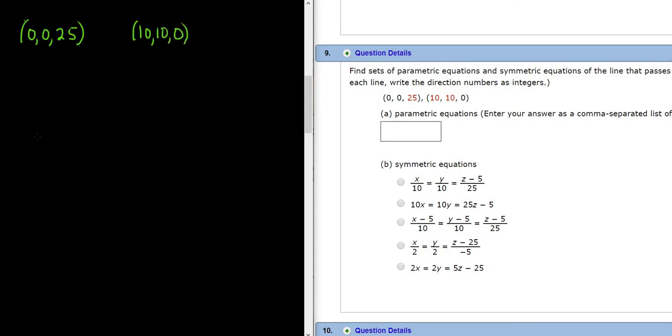So the formula for the parametric equations is x equals x sub 0 plus at, y equals y sub 0 plus bt, and z equals z sub 0 plus ct. In all of this, your x naught, y naught, z naught, that's a point, and your a, b, c is a parallel vector.